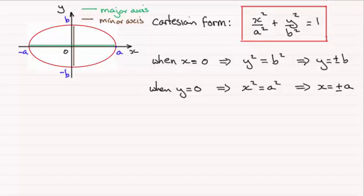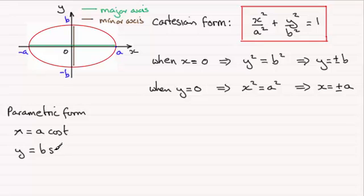Now the other form that I want to talk to you about is called the parametric form. And for this we should be able to see that x equals a cosine t, or a cos t for short, and y equals b sine t will work for this particular equation. Because let's just say we call that equation 1.